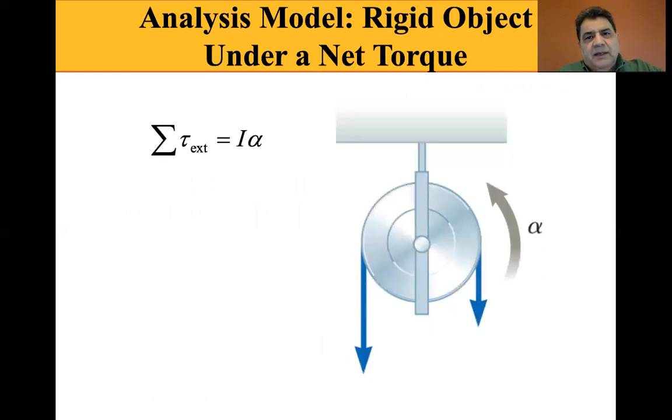The rigid model, rigid object under a net torque. Oh, I went too far on my notes or did I? Yes, I did. The sum of the external torques is equal to I alpha. And there are some examples like a bicycle chain around the sprocket of a bicycle causes the rear wheel of the bicycle to rotate.